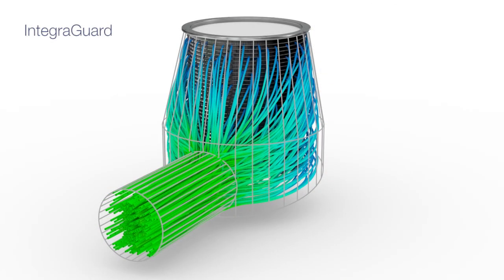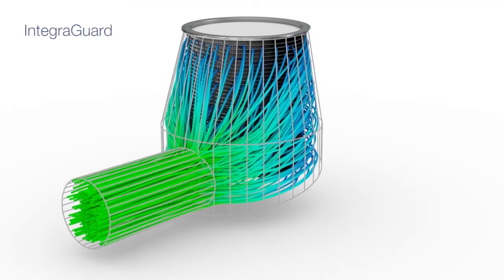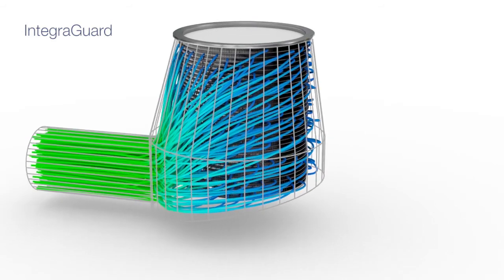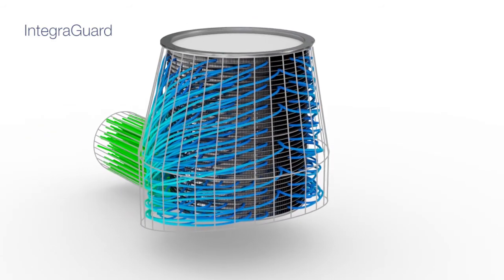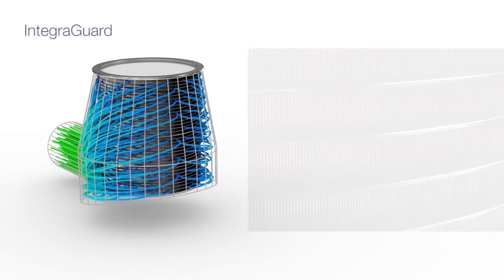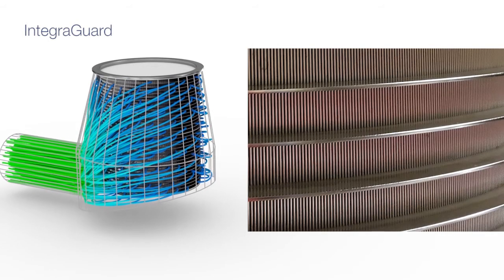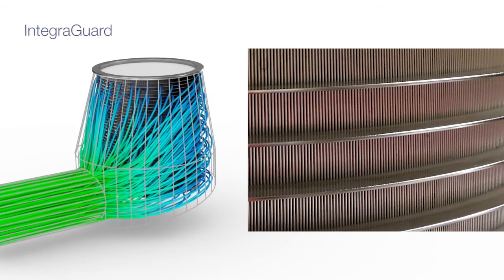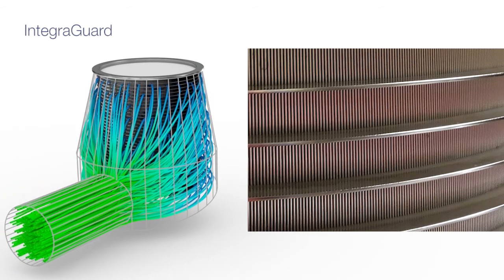The most obvious advantage of IntegraGuard over the cylindrical design is therefore the homogenizing of flow speed on the accept side. In addition, the inclined bottom that opens to the accept outlet presents a smaller target for heavily laden stock. Overall, this significantly reduces deposits and spinnings.